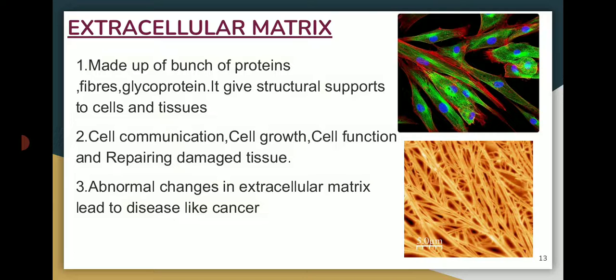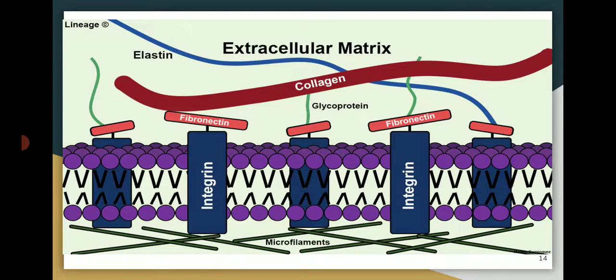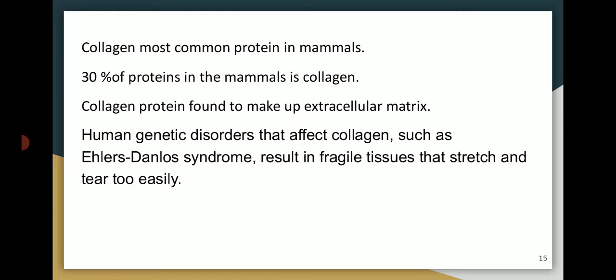Abnormal changes in the extracellular matrix can lead to diseases like cancer. The most common extracellular matrix protein is collagen, which is the most common protein in mammals — making up 30% of mammalian proteins. If there is a human genetic disorder affecting collagen, such as Ehlers-Danlos syndrome, it results in fragile tissues that stretch and tear too easily.